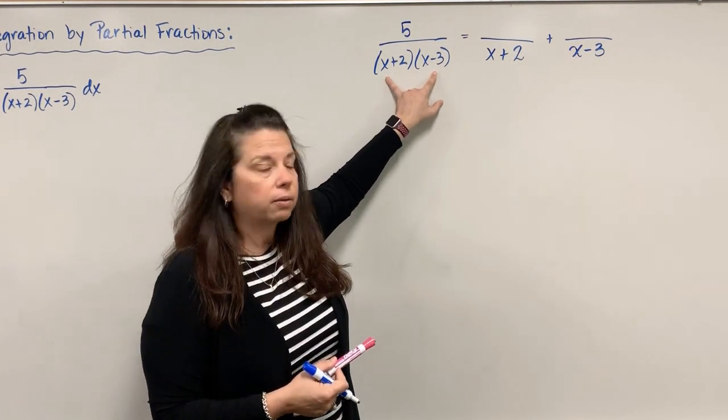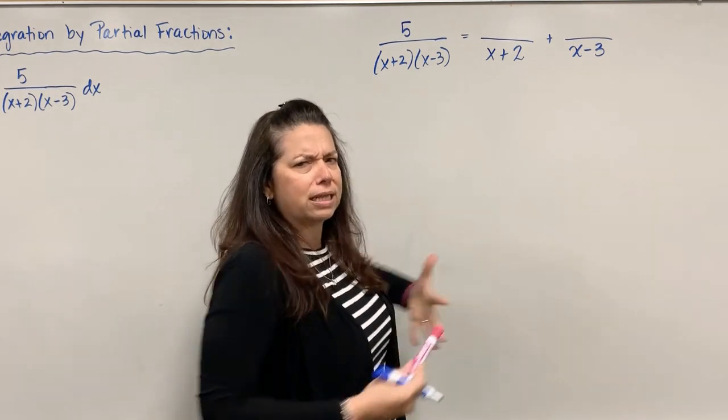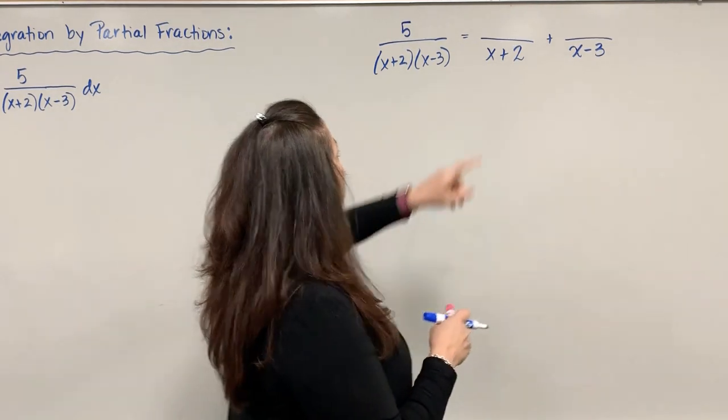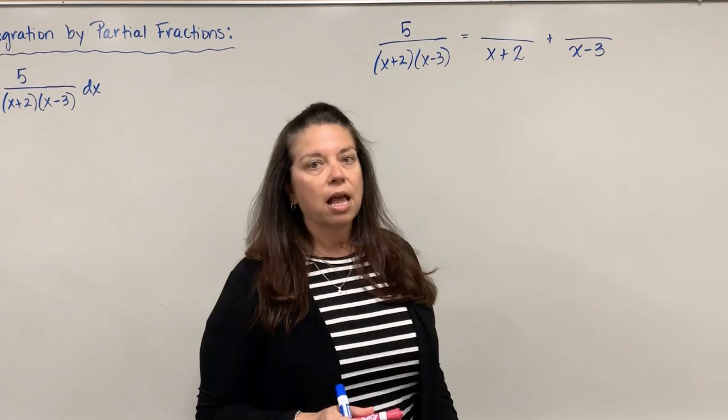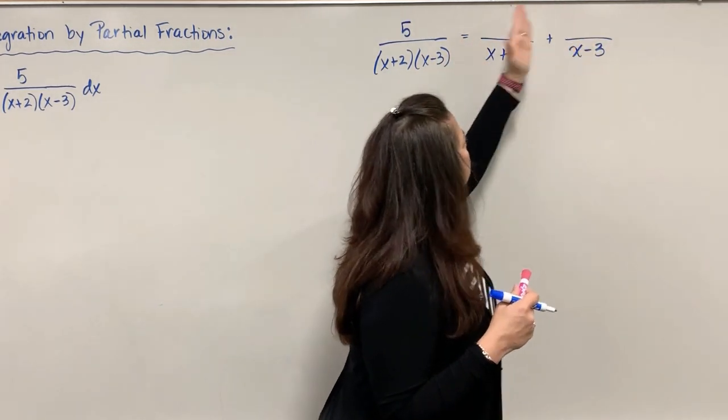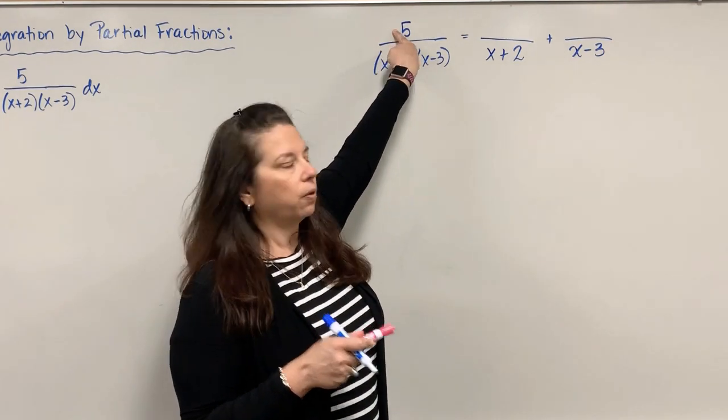When I'm adding fractions together or subtracting, we need to have that common denominator. We multiply those denominators together. If I take x+2 times x-3, I do have what I started with. So I'm decomposing this big fraction, but I don't know what the appropriate numerators are that would give 5.